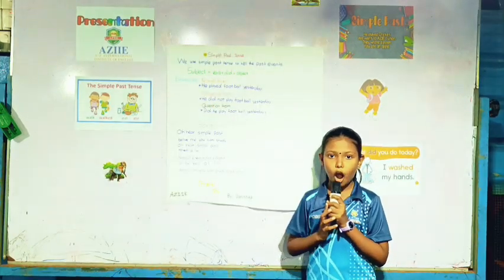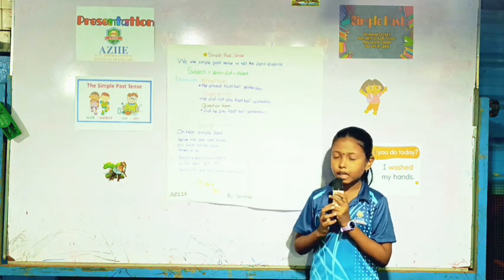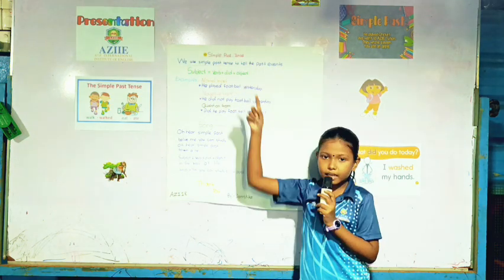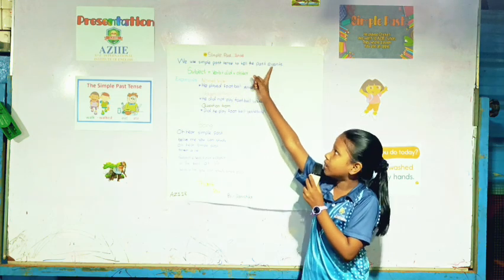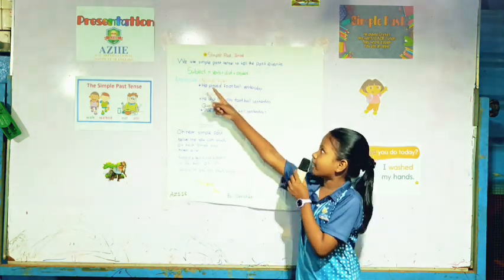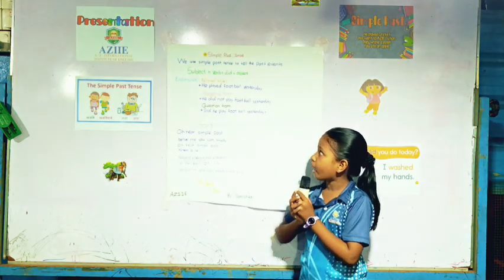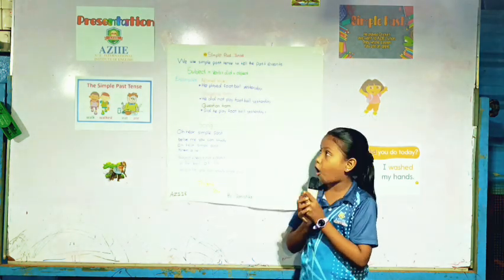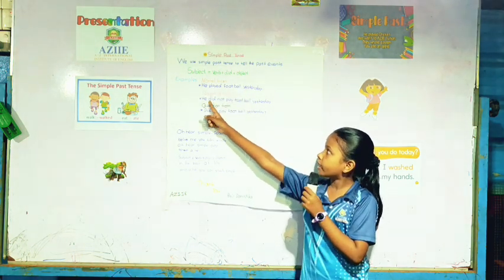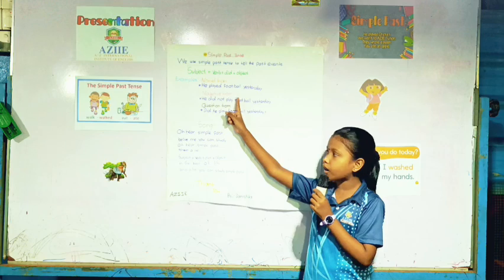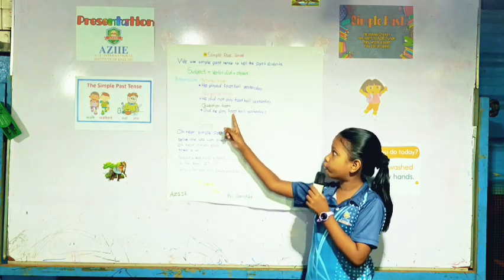Good evening, all of you. My name is Danny Sikhar. I am going to explain about simple past tense. We use simple past tense to tell the past event. Structure: subject plus verb plus big past plus object. Normal form: He played football yesterday. Negative form: He did not play football yesterday. Question form: Did he play football yesterday?